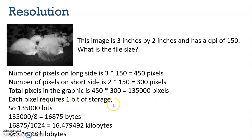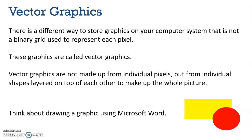Each pixel requires one bit of storage, so that's 135,000 bits, which is also equivalent to 16,875 bytes, and that can be converted into kilobytes as well. We're now going to look at vector graphics — a different way to store graphics on your computer system that doesn't use a binary grid to represent each pixel. These graphics are called vector graphics, and they're not made up of individual pixels at all, but rather from individual shapes layered on top of each other to make up the whole picture.